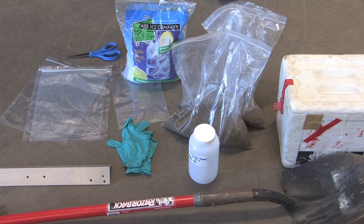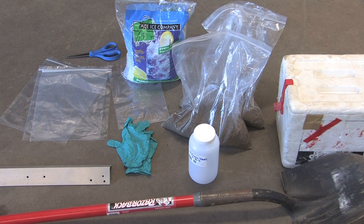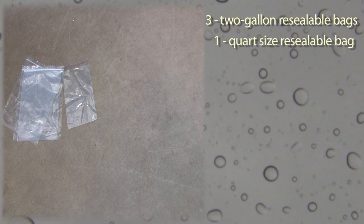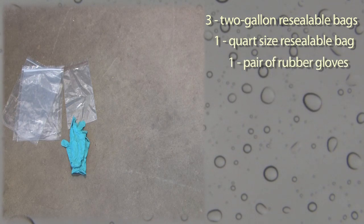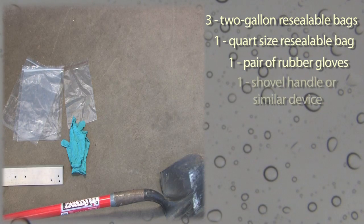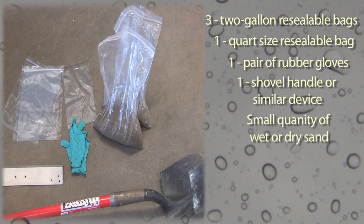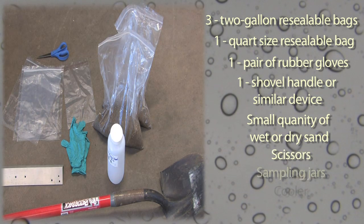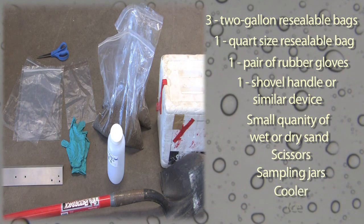Be sure to have these materials ready ahead of time, right before you're going to collect your sample. What you need for sheet flow sampling is: three two-gallon Ziploc bags, one one-quart-sized Ziploc bag, one pair of gloves, an item like a shovel handle or other device to create a dam, a small quantity of wet or dry sand, scissors, sampling jars, a cooler, and ice.